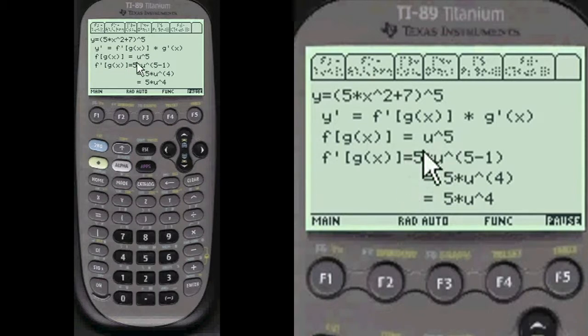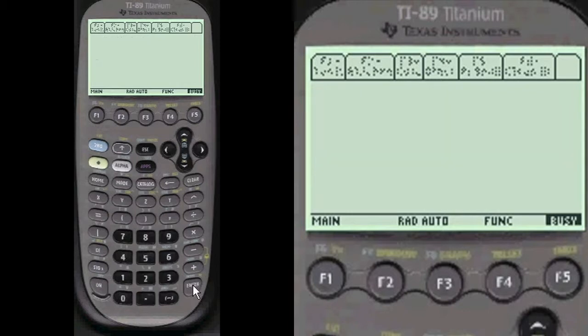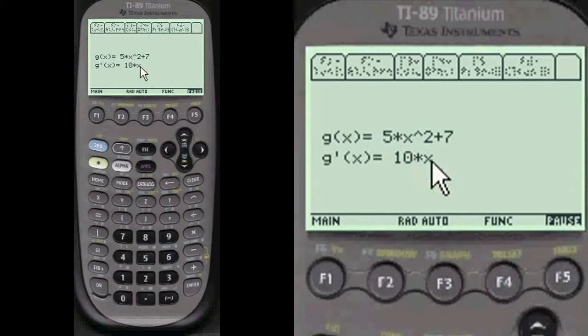That's where we put the terms into the formula. Mark everything down in your paper as you see it. Here's the derivative of g of x, which is 10 times x.